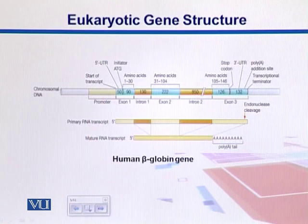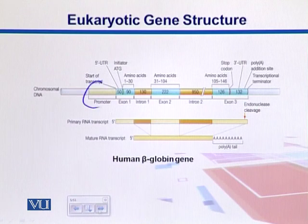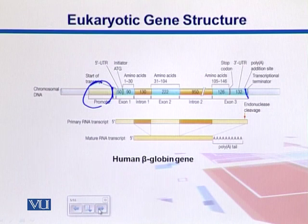Here is the structure of a typical eukaryotic gene. We see there is a chromosome, and the gene is the region where we can see some specific patterns. There is a promoter region, then the start of transcription. Transcription starts from here and ends at this point, so this whole region is transcribed into messenger RNA. The blue ones are exons and the orange ones are introns.